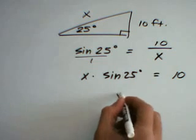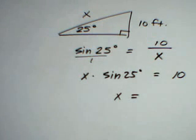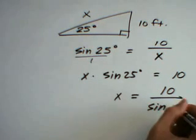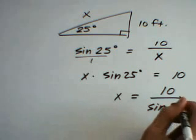Now to solve for x, we need to divide both sides of the equation by the sine of 25 degrees. So this gives us 10 divided by the sine of 25 degrees.